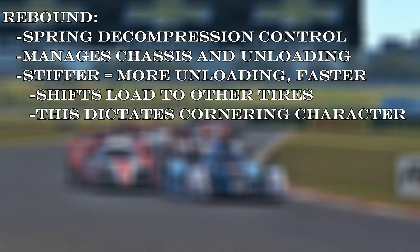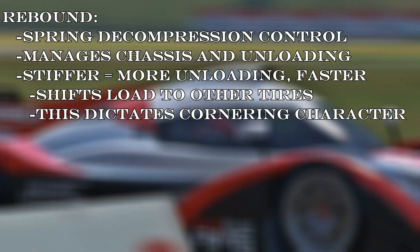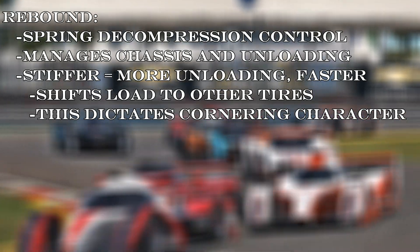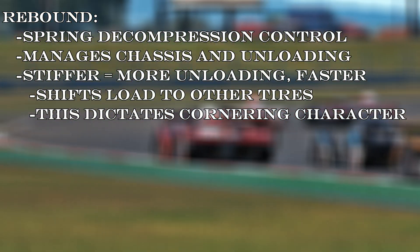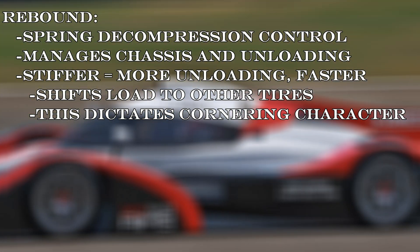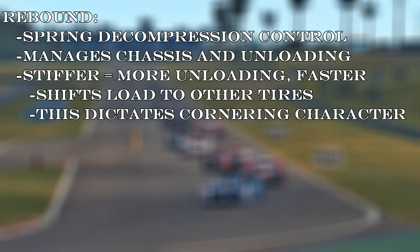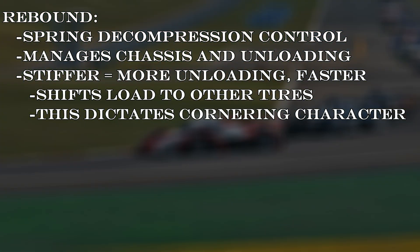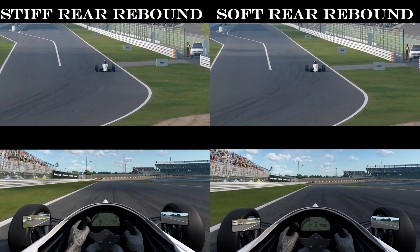Rebound controls how the tires decompress — they manage the weight of the car chassis when the car wants to unload. Think when you are braking heavily and the rear of the car seems like it wants to lift off the ground. The most fascinating thing about rebound is that when the tires are unloading, that weight doesn't disappear — it's shifting that load to the other wheels, which is where the cornering characteristics come from.